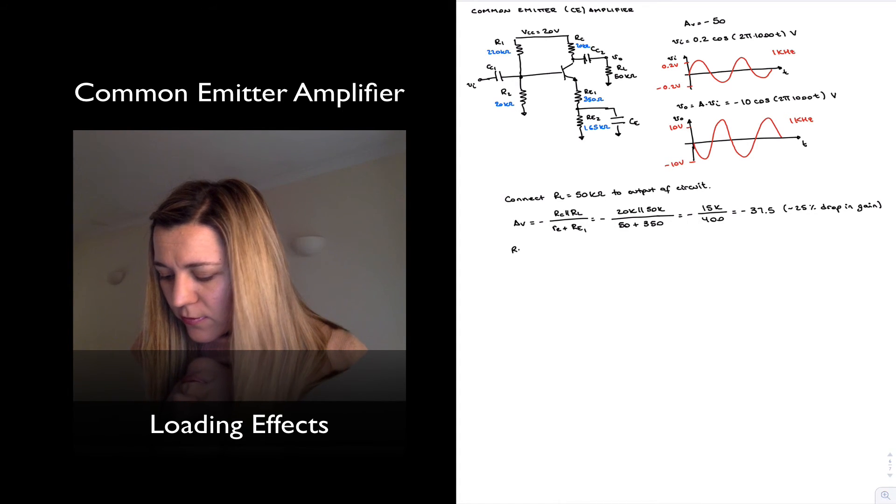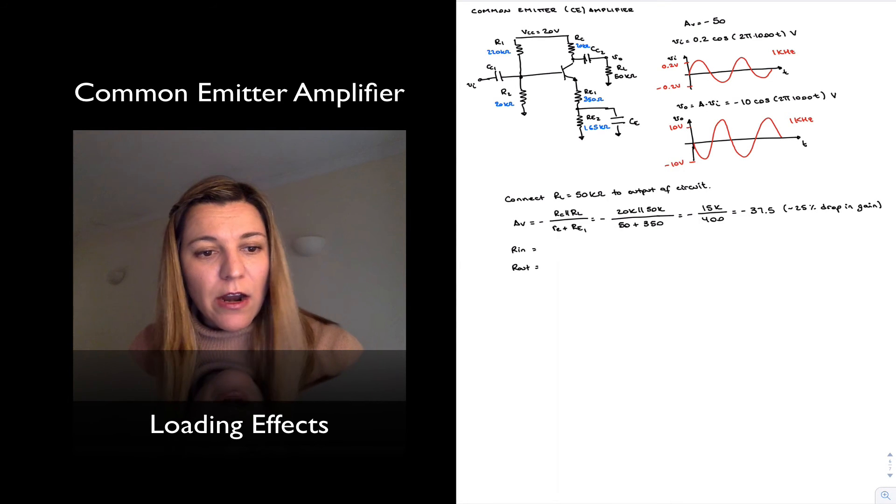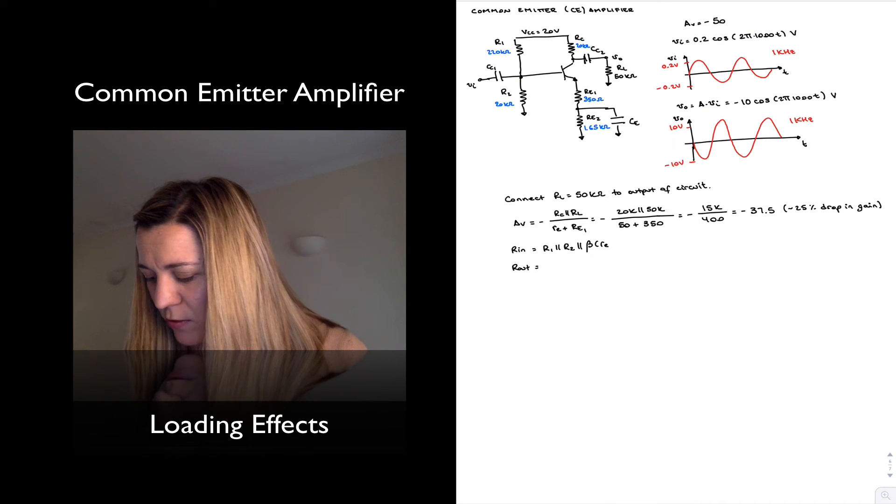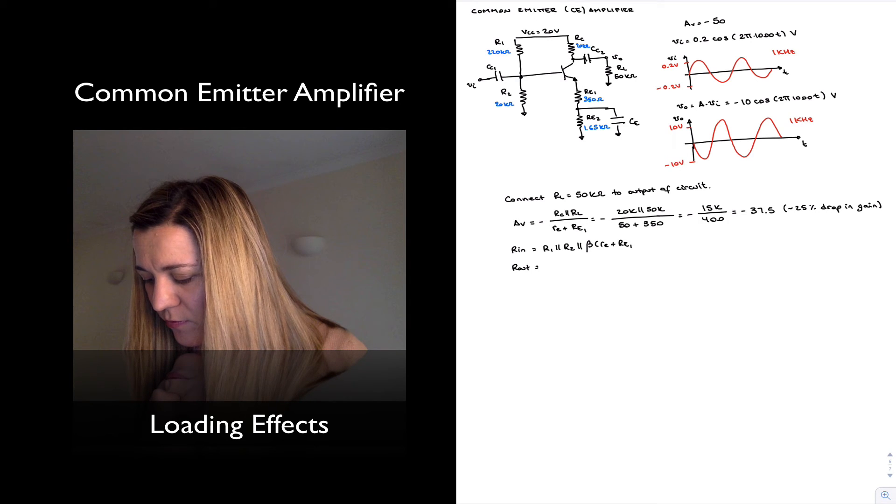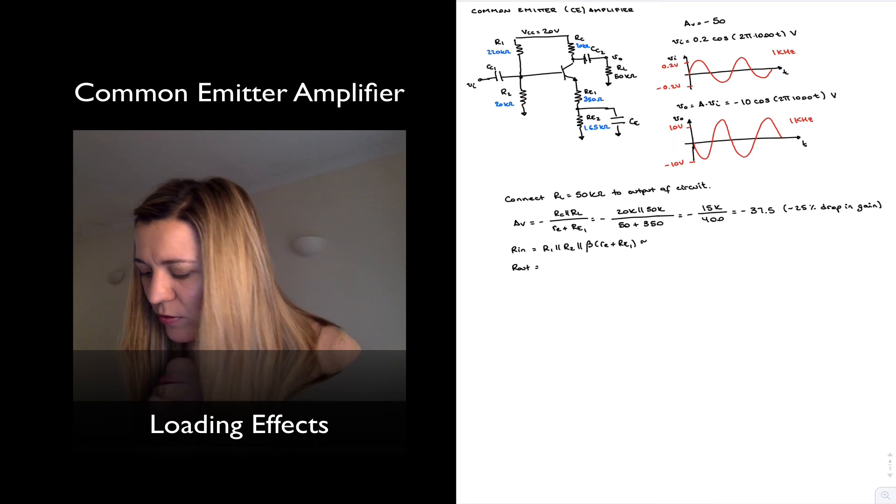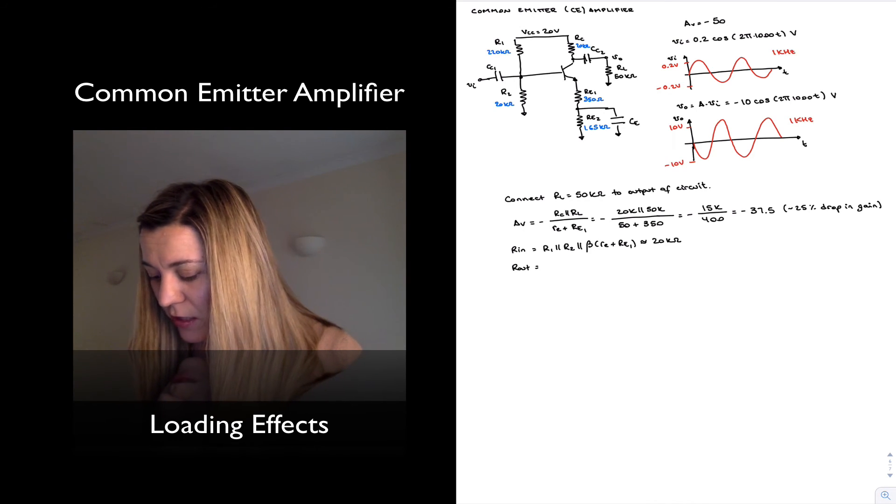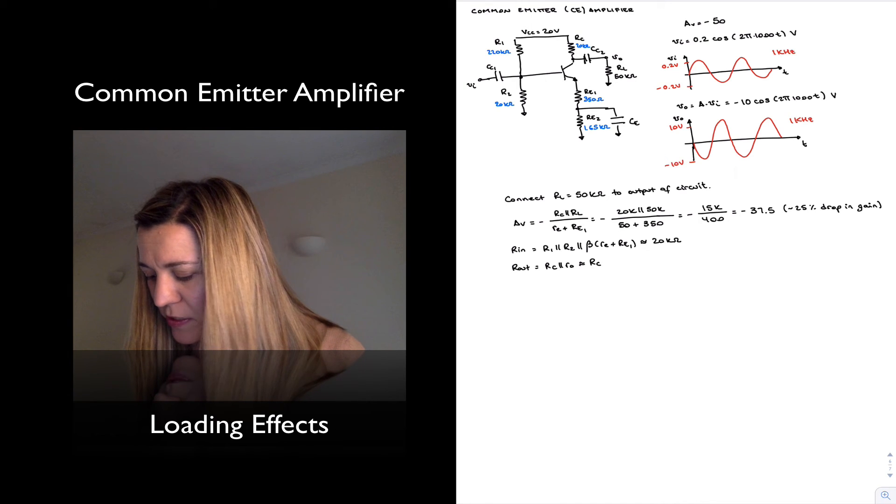it has an R in value of R1 in parallel with R2 in parallel with beta times little RE plus RE1. And we can say it's going to be lower than 20K, but let's imagine that we still can approximate it as 20K. It's going to be more like closer to 15. And Rout was RC in parallel with little O, which was approximately equal to RC, which is 20K.